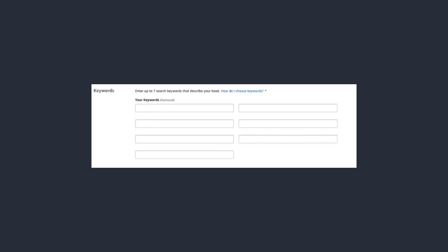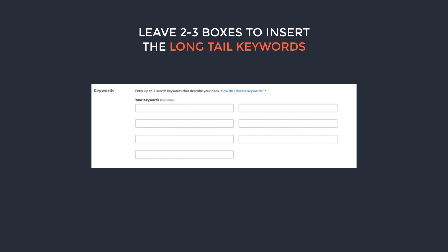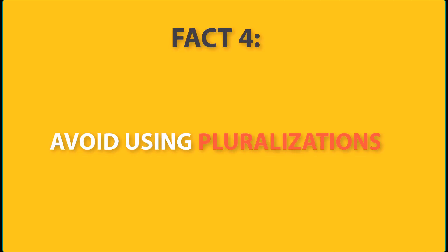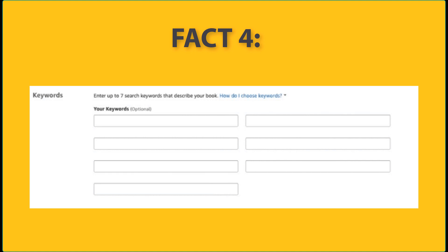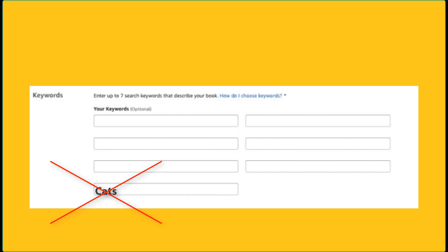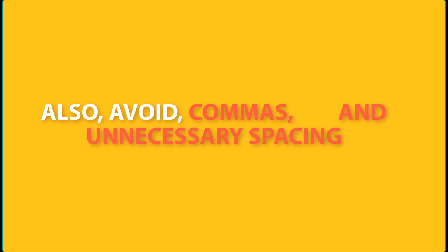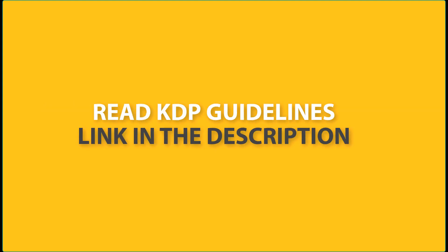You should leave two to three boxes specifically for inserting long-tail keywords and insert nothing except the long-tail keywords you are targeting. The next fact: avoid using pluralizations — if you have the word 'cat,' avoid also using 'cats.' Also avoid using commas and unnecessary spaces, as these waste space. Avoid using metadata that could mislead customers, such as popular author names or phrases like 'best-selling book.'